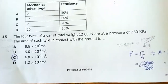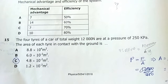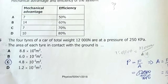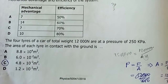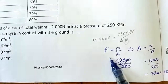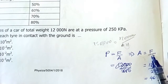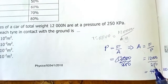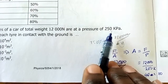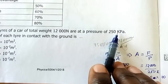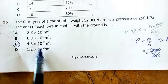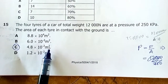Question 15: Four tires of a car have a total weight of 12,000 N at a pressure of 25 kilopascals. Find the area of each tire in contact with the ground. Using pressure = force/area, making area the subject: area = 12,000 / 250,000. My final answer is 4.8 × 10⁻² m² total. Note that kilo means 1000, and capital K is kelvin, not kilo.